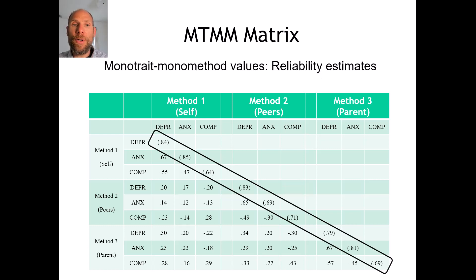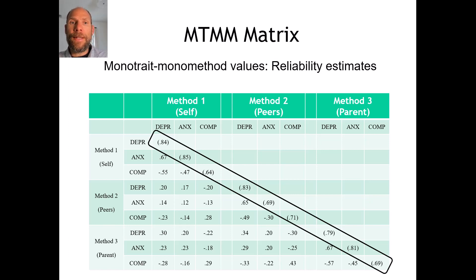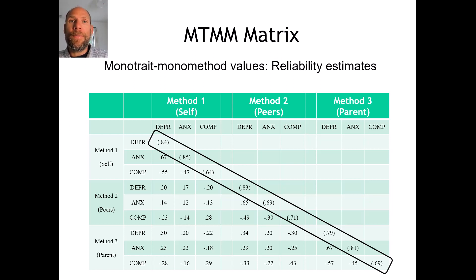First, there are the so-called mono-trait mono-method values. Mono means same — same trait and same method. You might expect those to simply be 1.0, since the correlation of a variable with itself is by definition equal to one. However, Campbell and Fisk figured that the diagonal space could be used in a better way by placing reliability estimates there, providing additional information about the precision of measurement. This doesn't directly relate to convergent or discriminant validity, but the reliabilities are derived from some other kind of analysis.